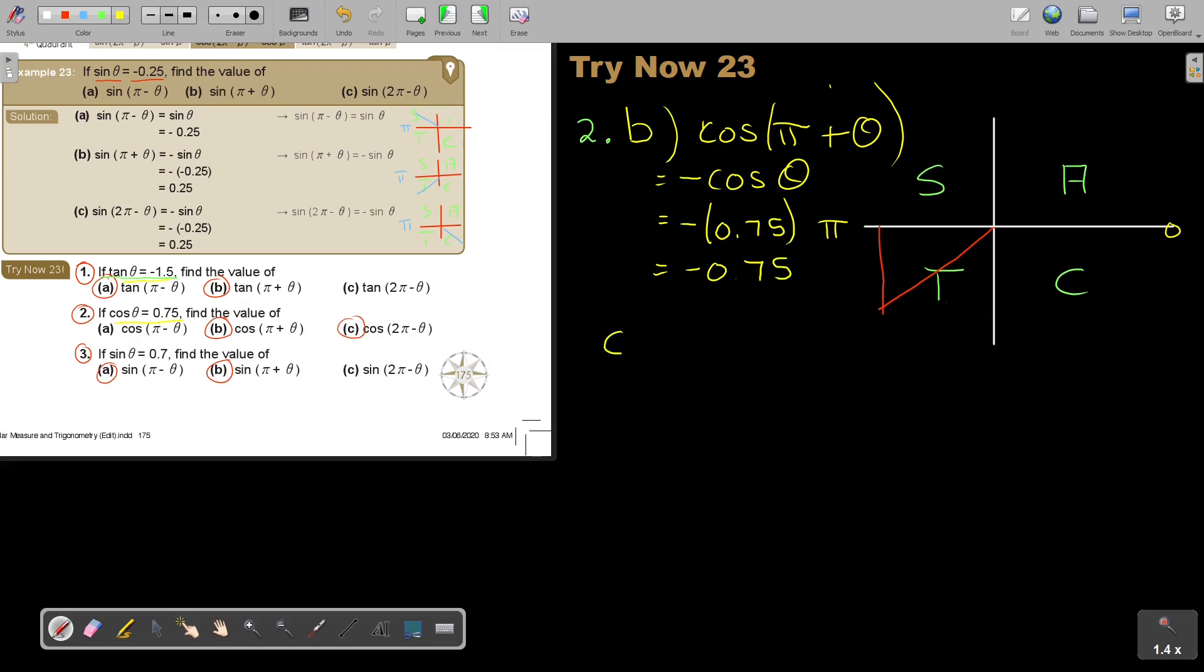And then, if I do number C, now it's cos 2 pi minus theta. So where is that? Now, this is in quadrant 4. That is theta. Now, what is cos in this? Oh, excellent. It's positive. So that's why I said, you don't have to write positive. That's going to be positive cos theta. And what is theta? It's 0.75. That's how you do it.